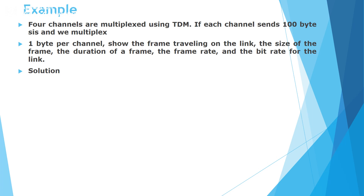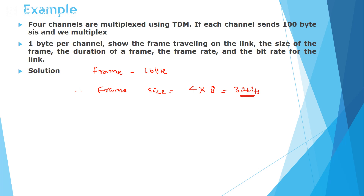Each frame carries one byte of information from each channel. Therefore, frame size is equal to 4 channels × 1 byte = 4 bytes, which is equal to 32 bits. If representing frame size in bytes, that is 32 ÷ 8 = 4 bytes.